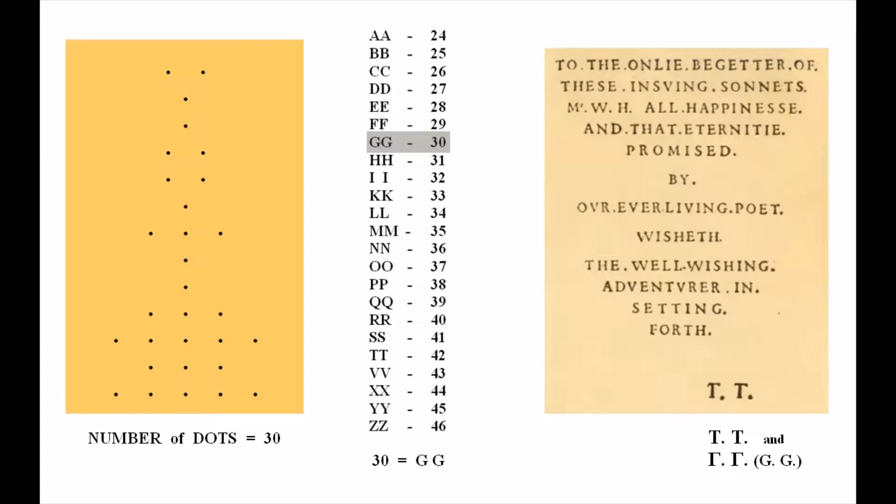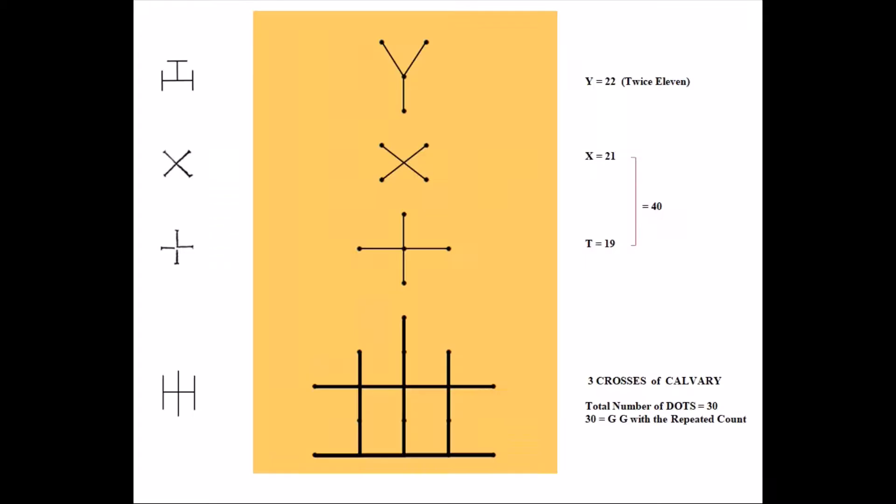Something else to consider is that there's 30 dots total. With the repeated count, 30 equals the letters GG. In videos 2 and 9, I explain how the initials on the dedication are printed so as to resemble two taus or two gammas. By doing this, I believe it connects God and de Vere, because the two G initials represent God and Jesus, and the double tau initials represent Edward de Vere, explained in video 14.